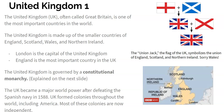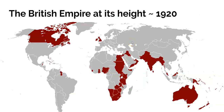The UK became a major world power after defeating the Spanish Navy in 1588. The UK formed colonies throughout the world after this time, including in North America, especially the 13 colonies that became the United States. Most of these colonies all around the world are now independent. In 1920 you can see that the British Empire had countries and colonies all over the world, from Canada to Australia to Africa to India. There are a couple questions in your notes about this map — push pause and do that now.